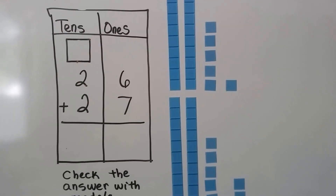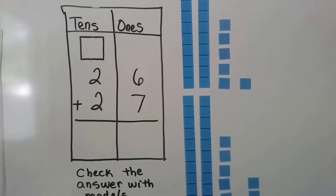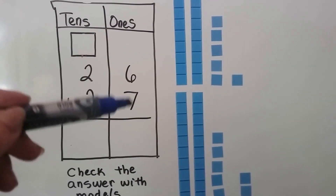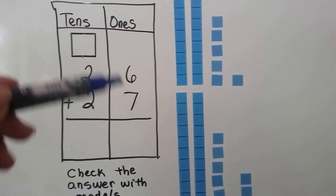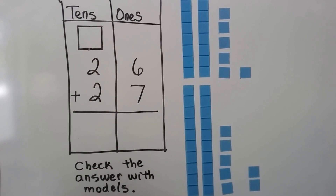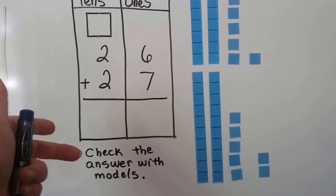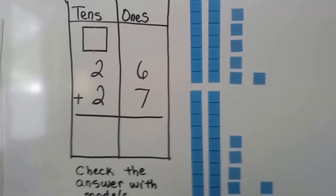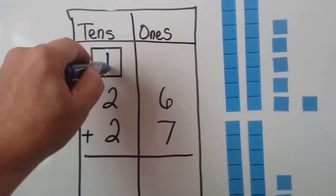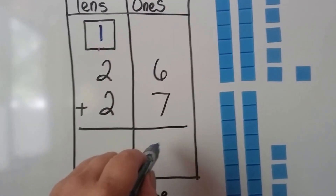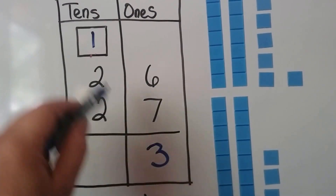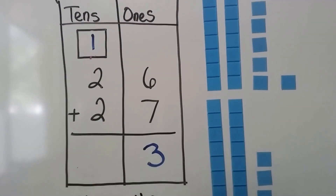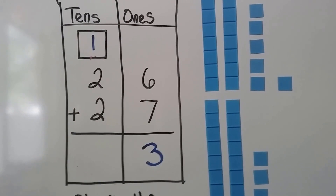Let's try that again. We have 26 plus 27. We're going to add the ones place first. We're going to start with the larger number and then count on the 6: 7, 8, 9, 10, 11, 12, 13. A 13 is 1 ten and 3 ones. We put the 10 in the tens place and the 3 ones in the sum of the ones place under the line.